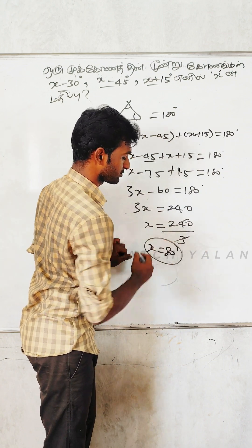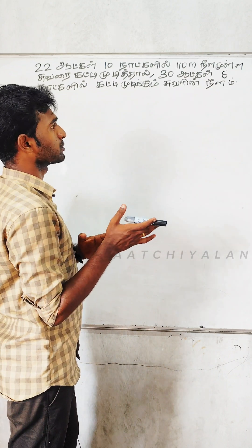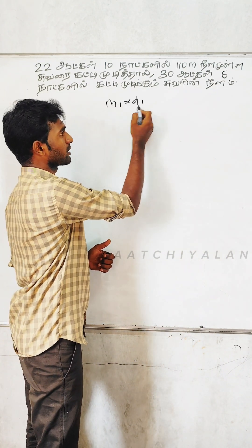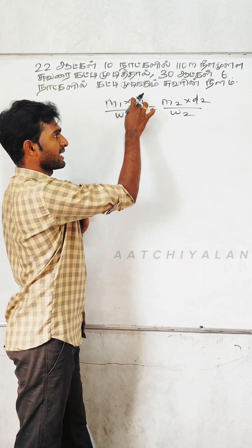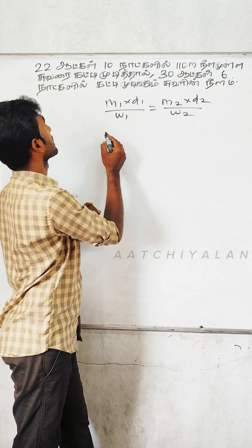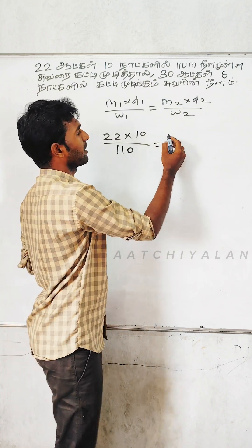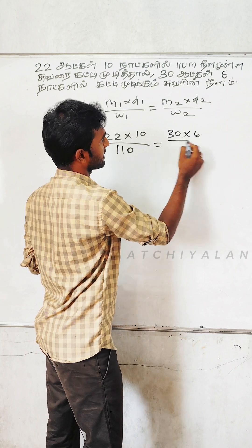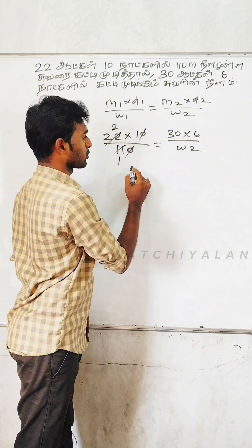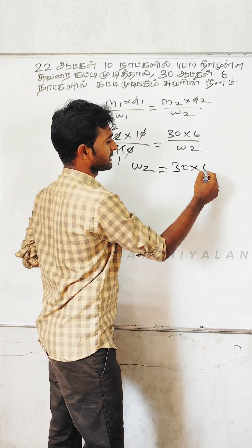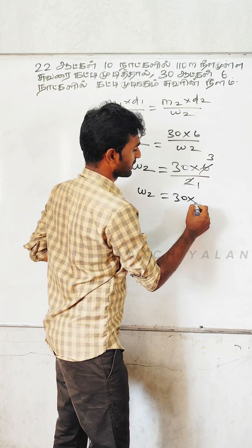M1 into D1 by W1 is equal to M2 into D2 by W2. That's the work formula — the same way for all art models. M1 is 22, D1 is 24. How many? 110 meters. M2 is the same way; we will do this in 64. Then we will cancel. W2 is the same way. If we cancel: 30 into 6 by 2, cancel — 1 and 2, 3 and 2. So, W2 is equal to 30 into 3, which equals 90 meters.